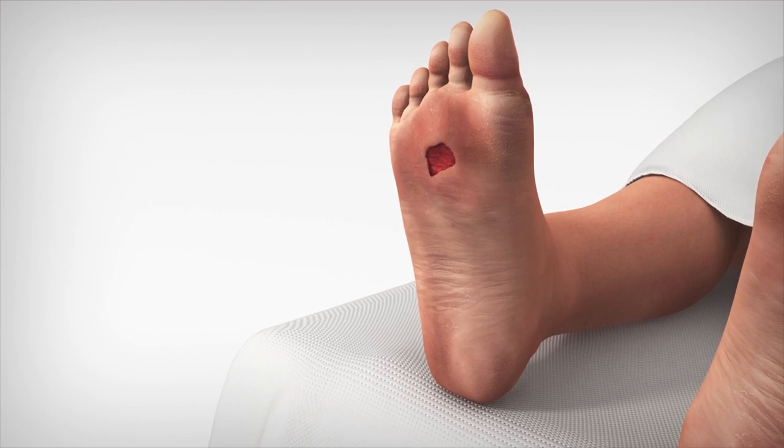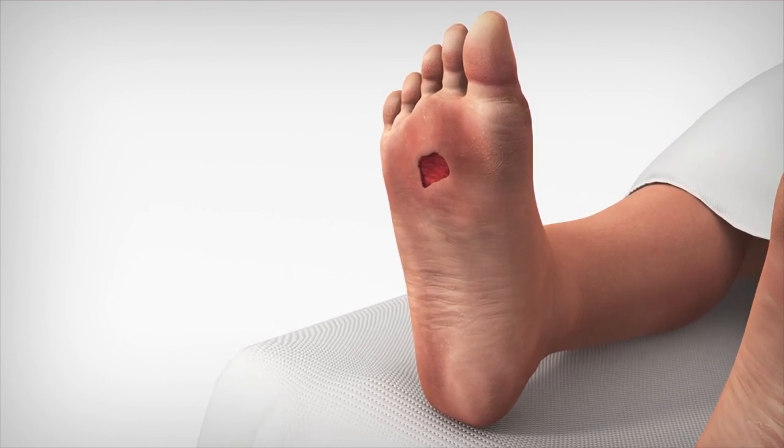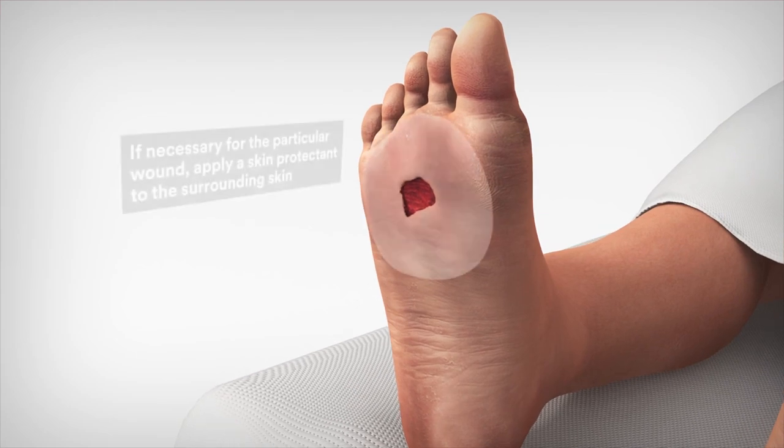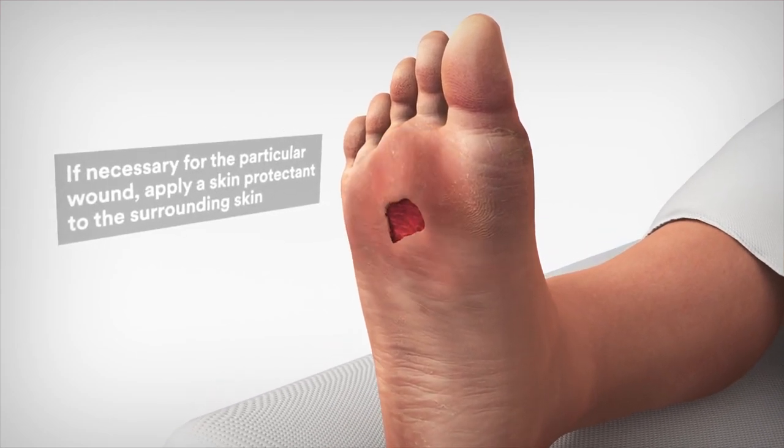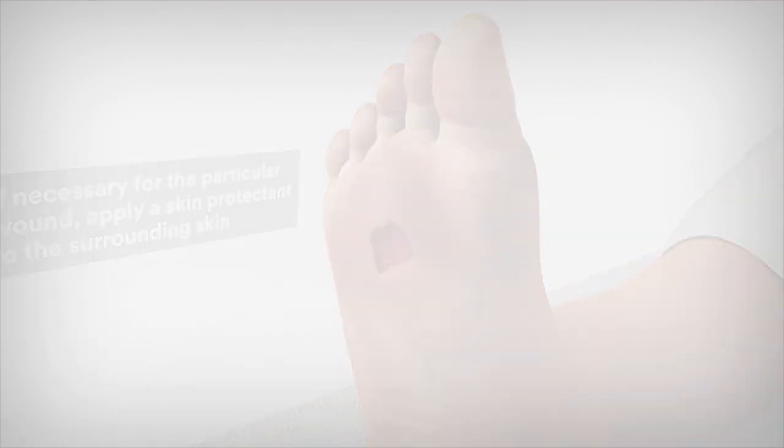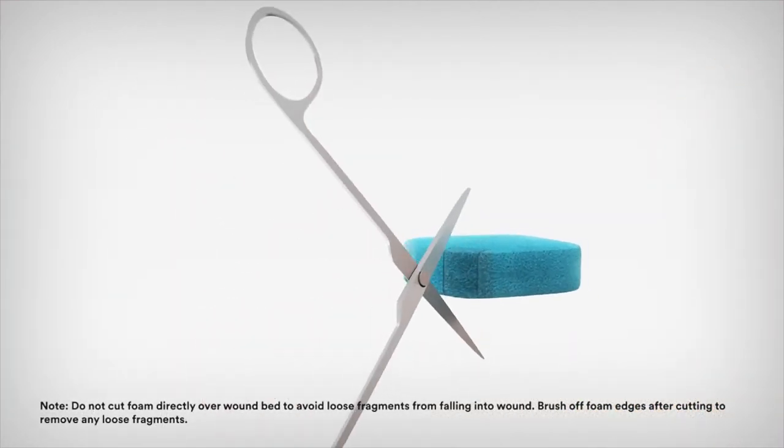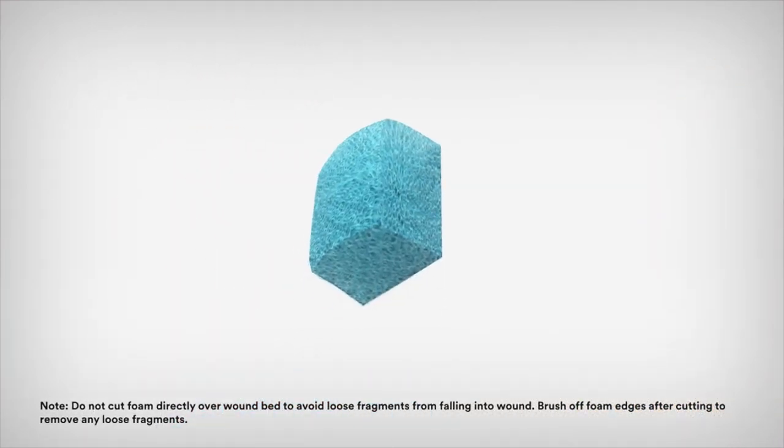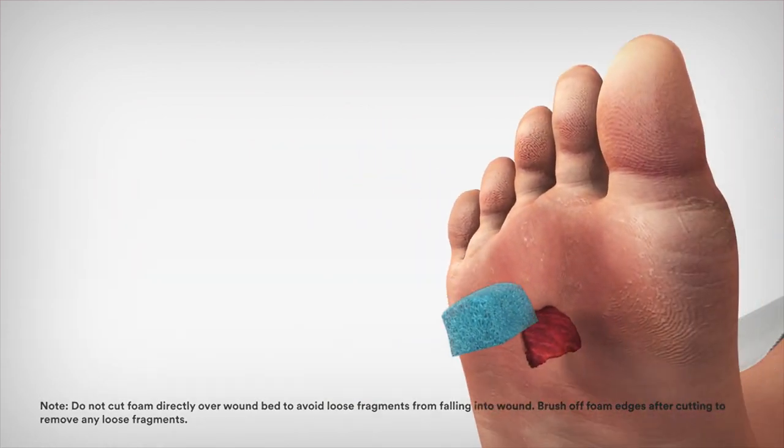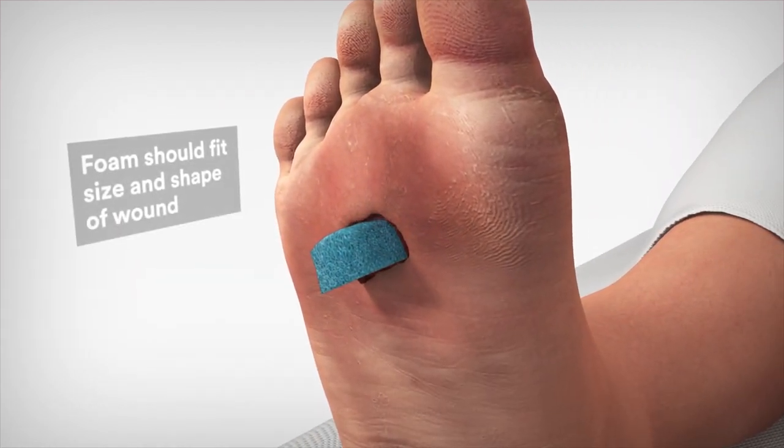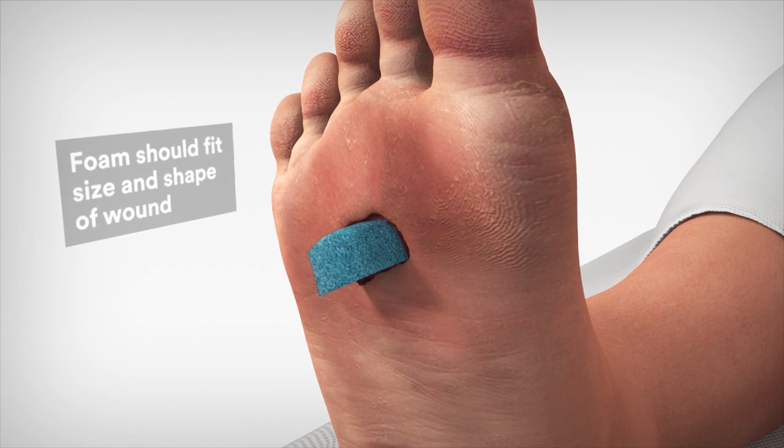Begin by preparing the wound bed and peri-wound skin per institutional protocol. If necessary, apply a skin protectant to the skin surrounding the wound. Next, cut the foam to fit the size and shape of the wound. Place the foam into the wound cavity, making sure the foam fills the wound cavity and extends above the wound margins.